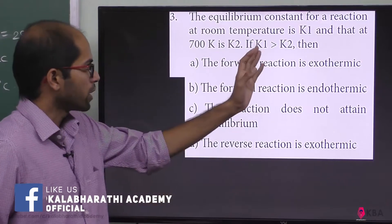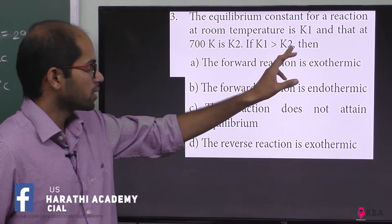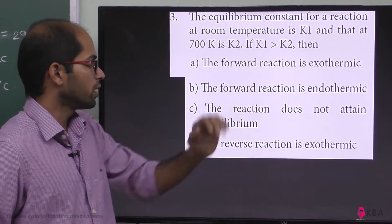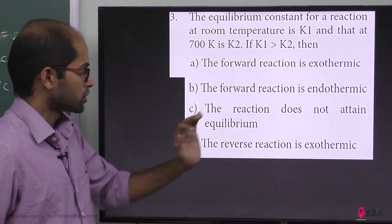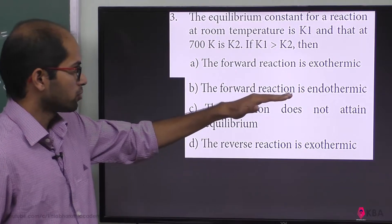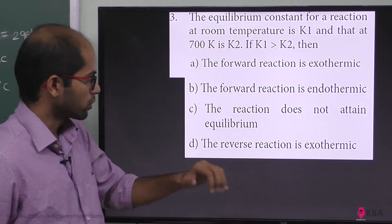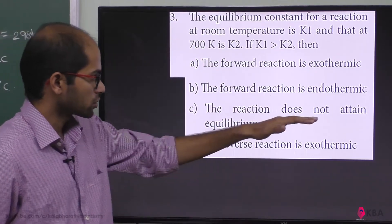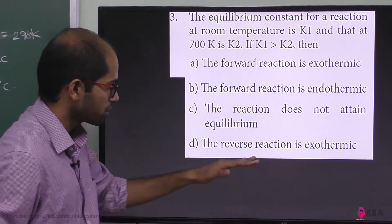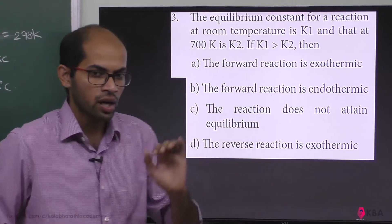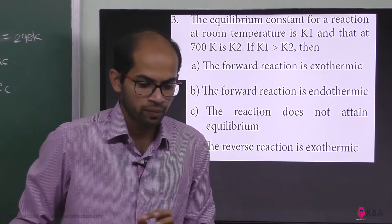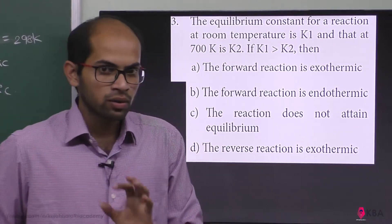If K1 is greater than K2, which of the following is correct? Option A: the forward reaction is exothermic. Option B: the forward reaction is endothermic. Option C: the reaction does not attain equilibrium. Option D: the reverse reaction is exothermic.